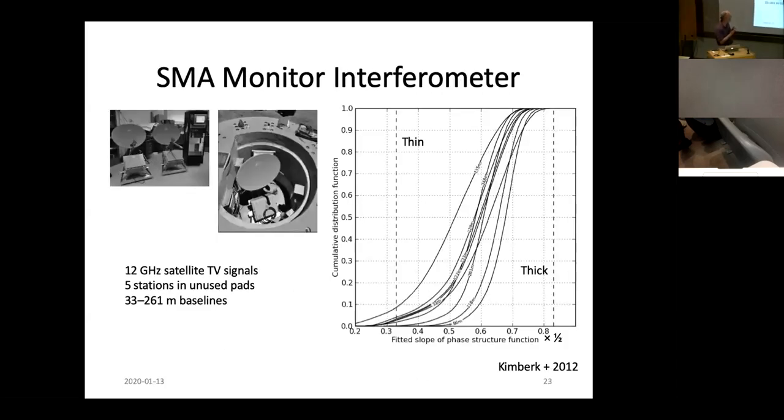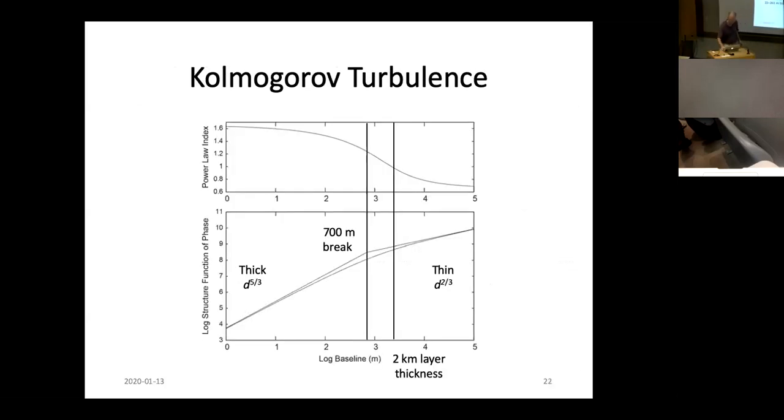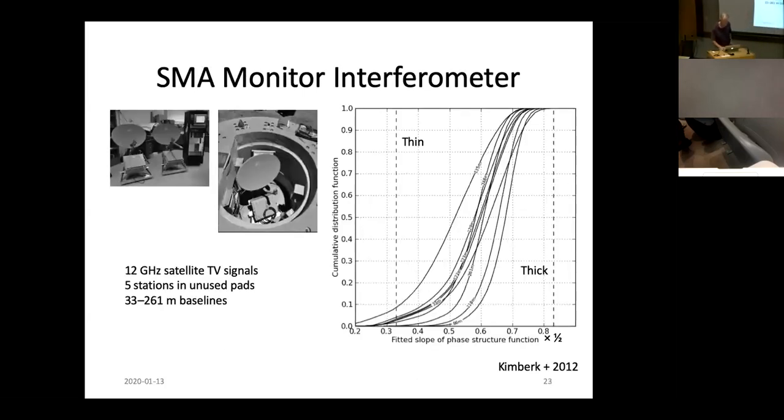We have a little interferometer at the SMA, an auxiliary interferometer. It has five stations to measure the atmospheric fluctuations. And these are the slopes of the structure functions measured by this interferometer. And they're intermediate between thick and thin. So most of the time it appears that the turbulence we're measuring is somewhere in this transition range between thick and thin turbulence.